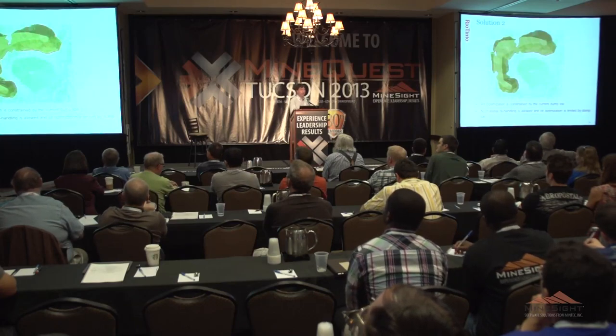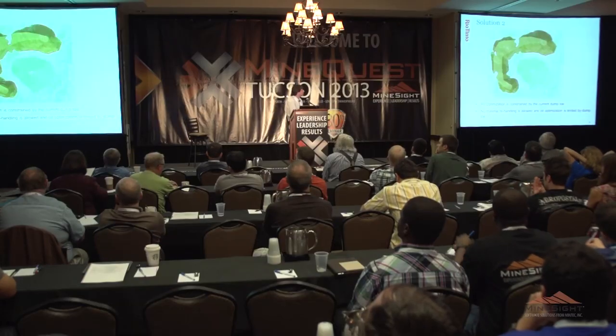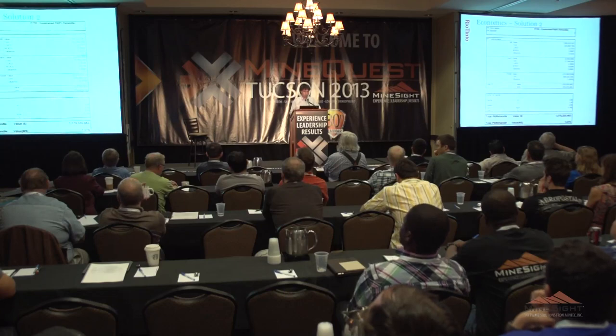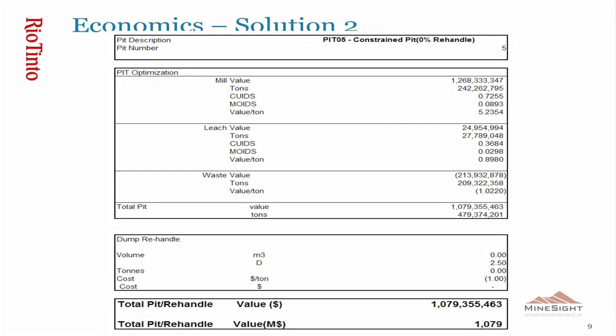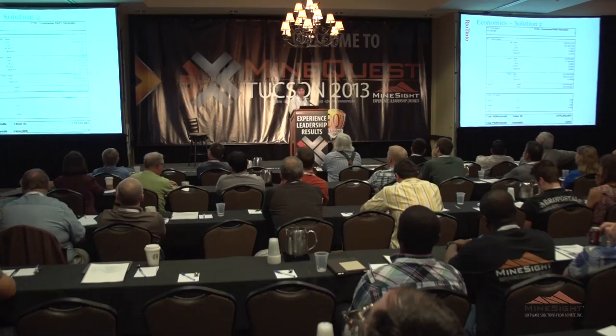Solution two is the less aggressive option — mining only the reserves up to the 200-meter offset limit. The dump is untouched and the pit expansion is constrained by that offset. The economics are: mill value $1.3 billion, leach value $25 million, and waste cost $213 million. There is no re-handle cost because the 200-meter offset is honored. The total value is $1.08 billion.